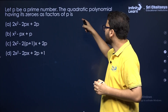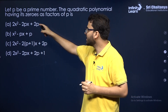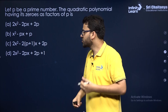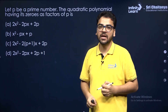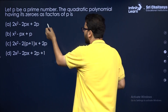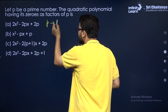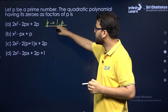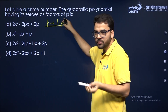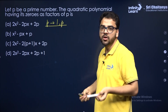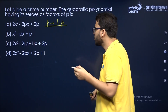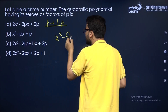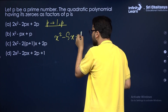Let p be a prime number. The quadratic polynomial having its zeros as the factors of p — just try doing this. p is a prime number, and the factors of a prime number are 1 and the number itself. So the two factors of p are 1 and p. The quadratic polynomial is x² − (sum of zeros)·x + (product of zeros).